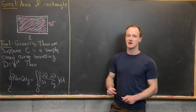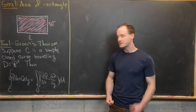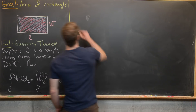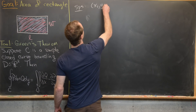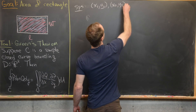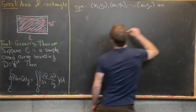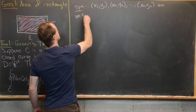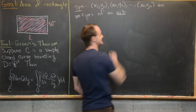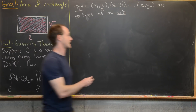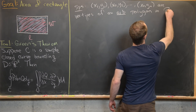The way we're going to apply Green's theorem is to first find the area of an arbitrary polygon in R². Suppose that the points X1,Y1, X2,Y2, all the way up to XN,YN are vertices of a polygon in R² — though not exactly arbitrary, we'll talk about that in just a second.